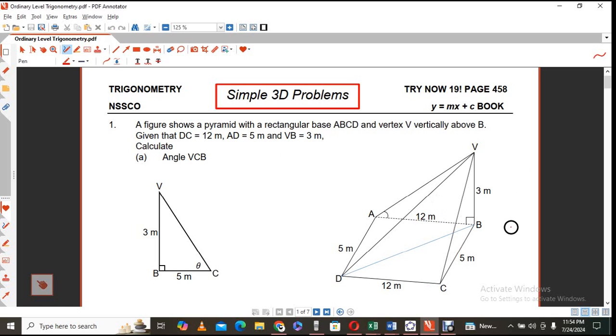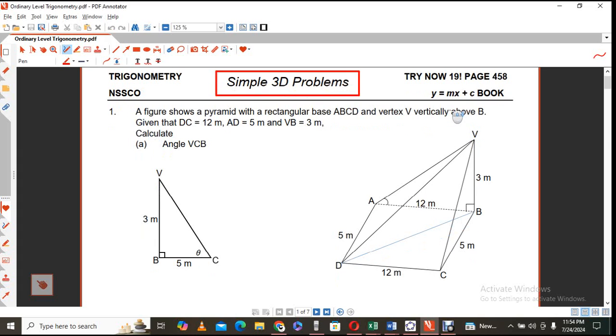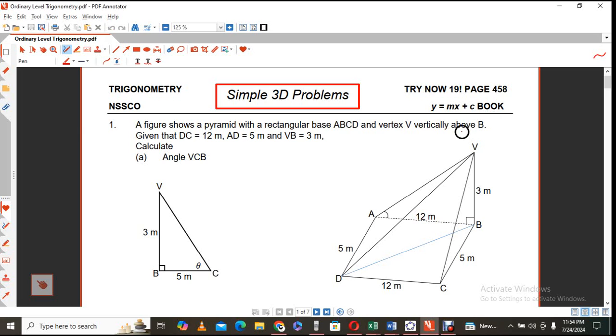And VB is equal to 3 meters, respectively. So you will see that if you are following and you have the Y equals MX plus C to success books for grade 11 and 10 and 11, then you can follow on page 458.